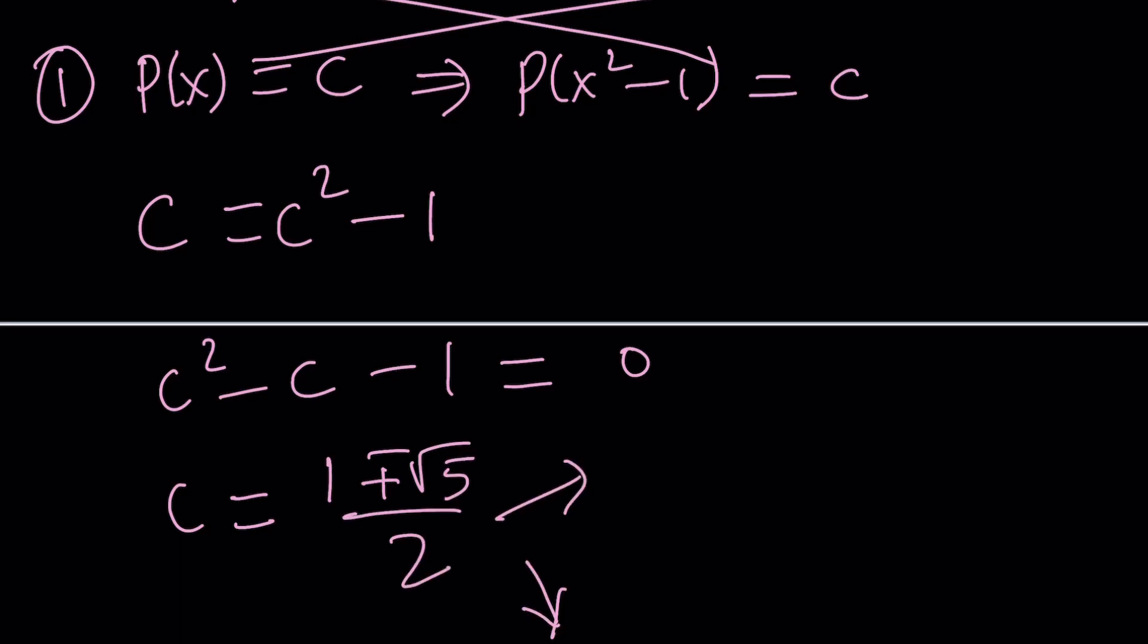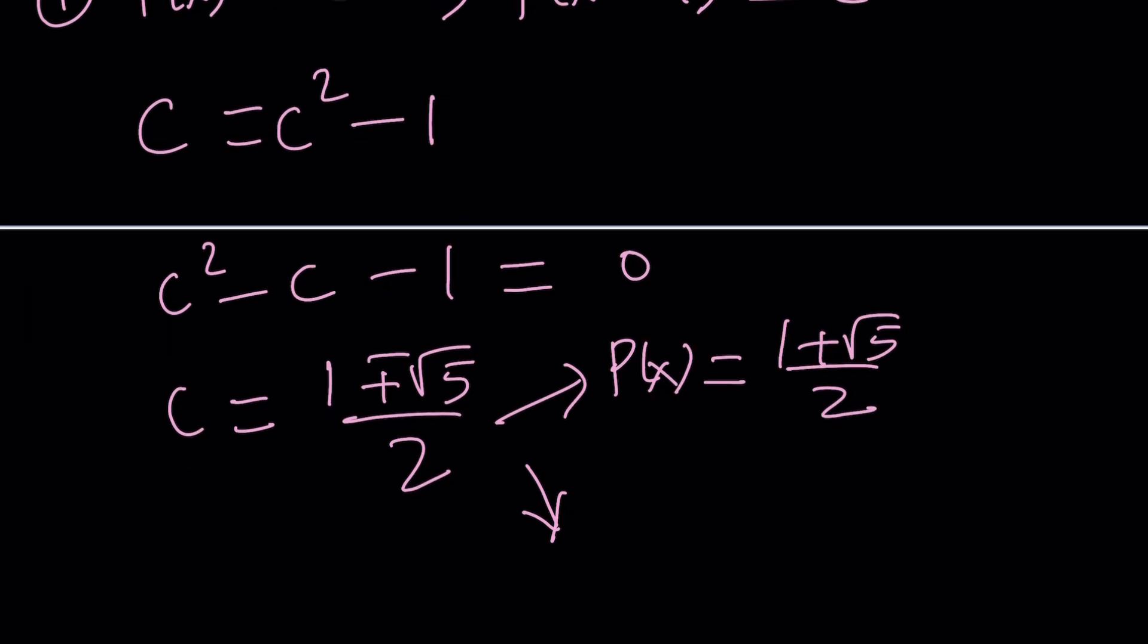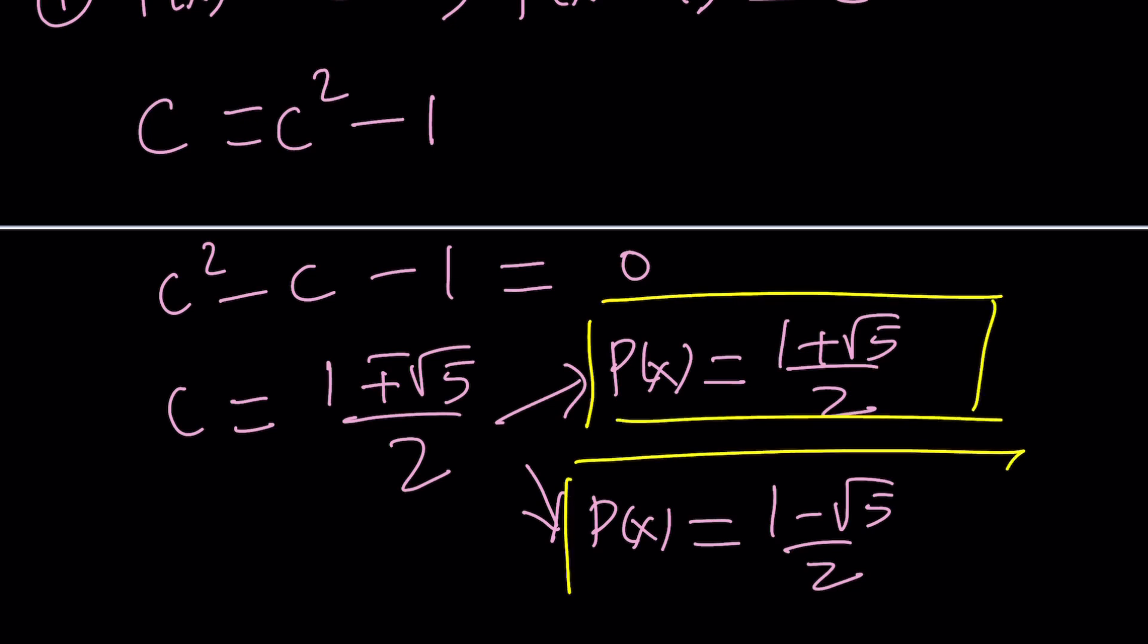And since c is p of x in this case, we can write the solutions as the constants separately. p of x can be 1 plus root 5 over 2 or p of x can be 1 minus root 5 over 2. So if you plug this in, you're going to realize that these are indeed solutions of the original equation. Now, these are the constant solutions, but does p of x always have to be constant?